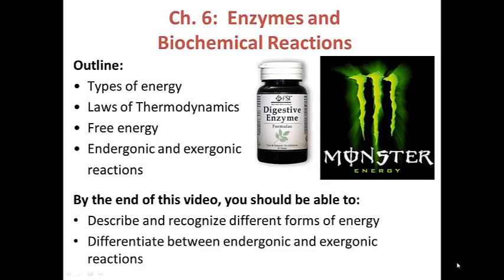In the last chapter we talked about proteins. One of the largest classes of proteins are enzymes, which are required for most of the chemical reactions in our body. In this chapter we're going to be focusing on how biological chemical reactions occur and how enzymes catalyze these reactions. In this introductory video we'll specifically talk about types of energy and how the laws of thermodynamics apply to that energy, how that leads to the concept of free energy, and we'll learn about endergonic and exergonic reactions.